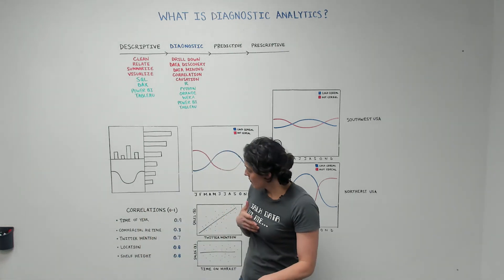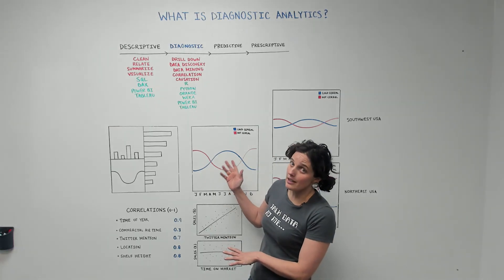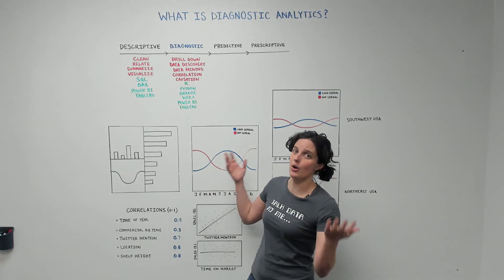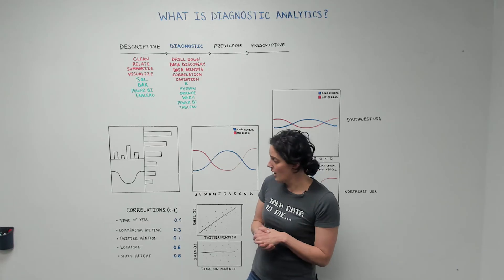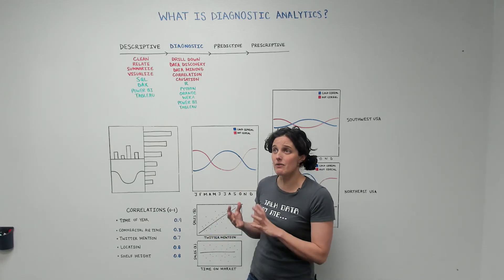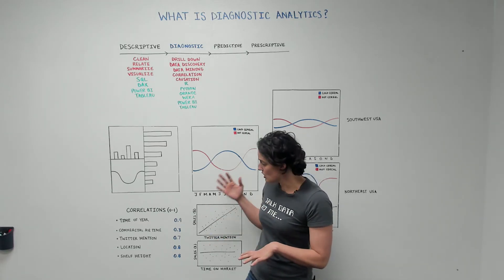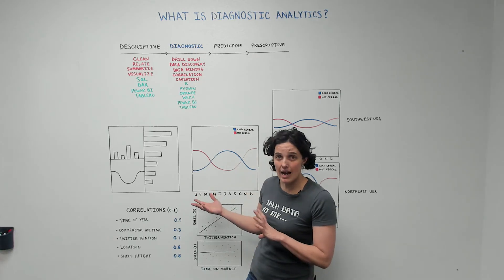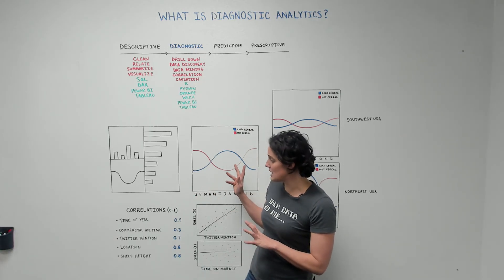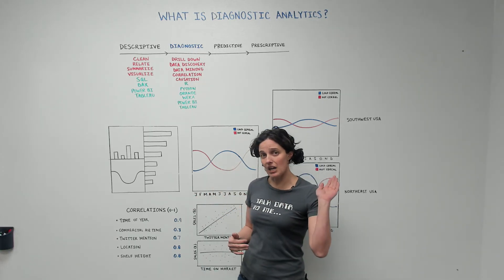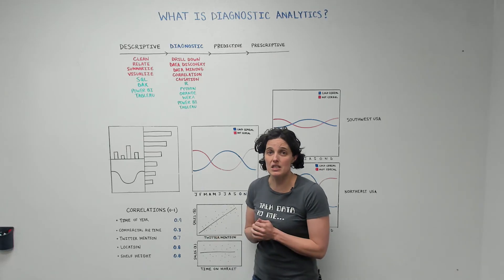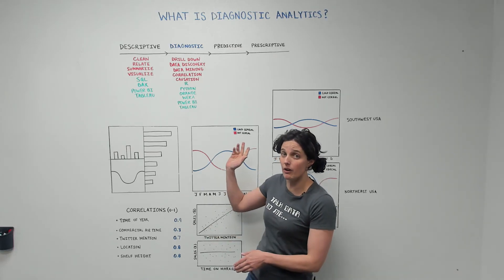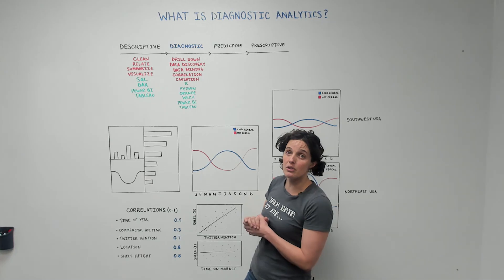So diagnostic analytics: why are things happening? What's causing things to go on? That's what it's really all about. It's a very explorative phase to look at what's causing things to happen. In this example, we see that the time of year and the location are two really important things that we want to keep in mind when we're going forward into predictive and prescriptive analysis.